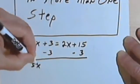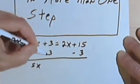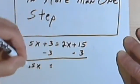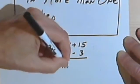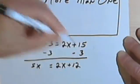5x is still going to be here, but the 3 and the negative 3 will cancel. So I've got 5x equals 2x, 15 minus 3, plus 12.